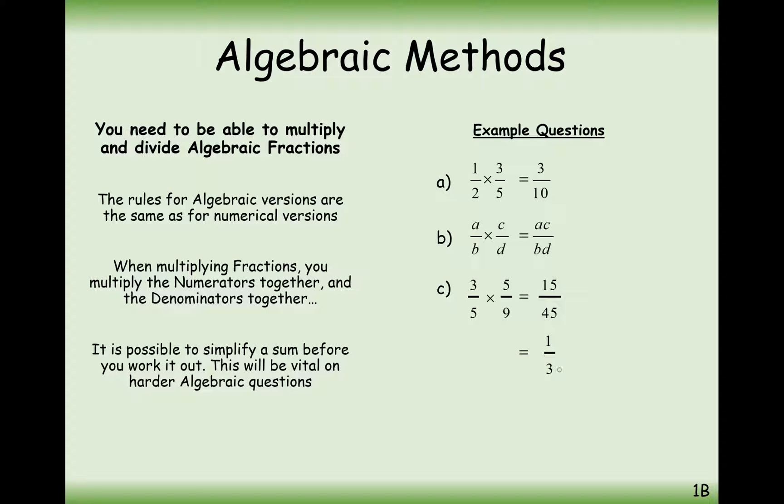In addition, you could do it this way, or also, it's also possible to simplify as sum before you work it out. This will be vital in harder algebraic questions. So for example, if we were to do this 3 fifths times 5 ninths again, what we could do is effectively swap these two over. So it's not going to affect the question in any way. All it's going to do is allow us to cancel down these fractions before we get started multiplying.